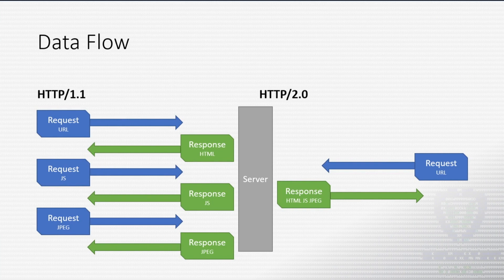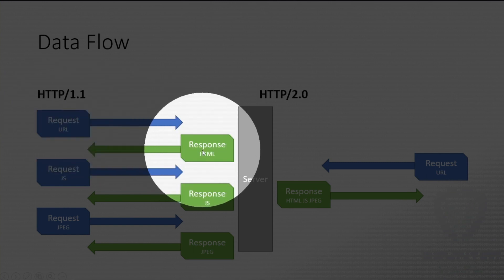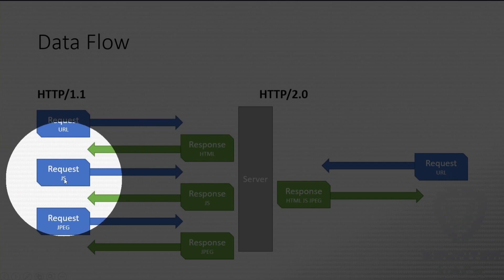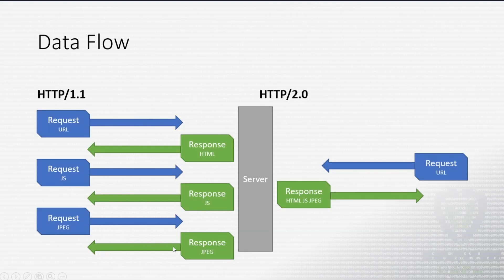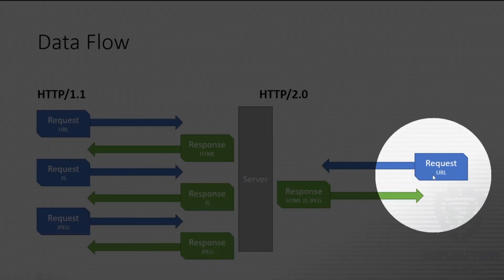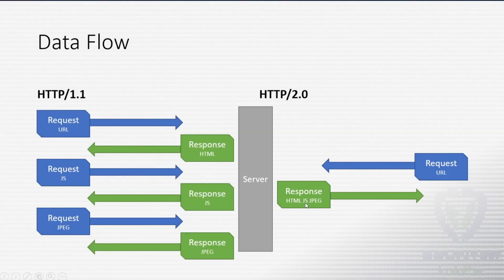Pictorially, we can sort of think of it this way. With 1.1, we would request a URL like slash or index, and then we would get that HTML file back from the server. Since that file referenced a JavaScript script, we request it and get it back. It references an image, we request it, we get it back, maybe some CSS — request it, get it back — all as individual connections with a three-way handshake, the push of the file, and then the four-way tear down. With 2.0, it's simpler — there's a single request for slash or index, and then the server can send back all the files that are necessary in a single push. Less overhead in terms of network traffic.